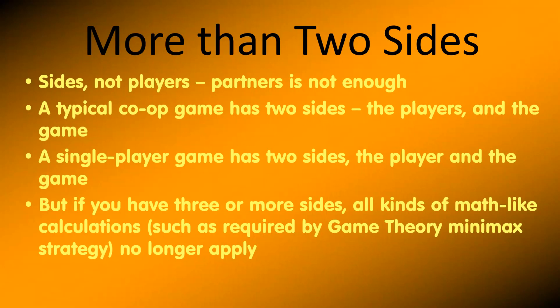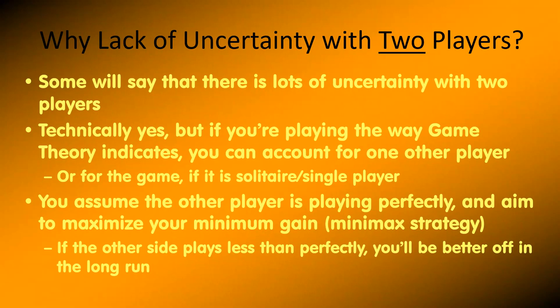More than two sides is a way to introduce uncertainty — and I'm talking about sides, not players. A typical co-op game or single-player game has two sides: the players and the game. But if you have three or more sides, all kinds of calculations required by game theory minimax strategy no longer apply. In a two-player game you have uncertainty about what the other player will do, but playing by game theory you can account for one other player or the game in solitaire. It becomes virtually impossible to account for more than one other side. You assume the other side is playing perfectly and aim to maximize your minimum gain — minimax strategy. If the other side plays less than perfectly, you'll be better off in the long run.